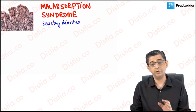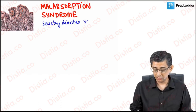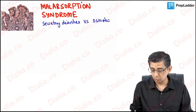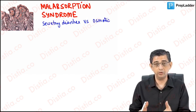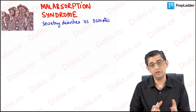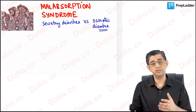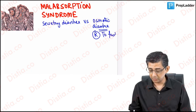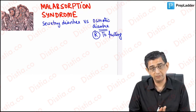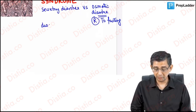To summarize: secretory diarrhea is associated with pancreatic neuroendocrine tumors and is non-responsive to fasting. In malabsorption syndrome, there's mucosal damage to the small intestine; the osmotic load is not absorbed, drawing in water. These patients mainly have osmotic diarrhea, which is responsive to fasting. Next, let's cover some basics about absorption sites.